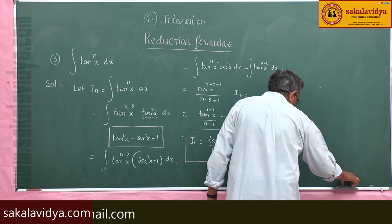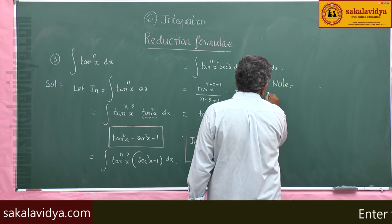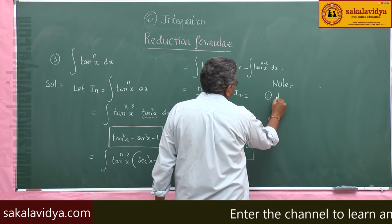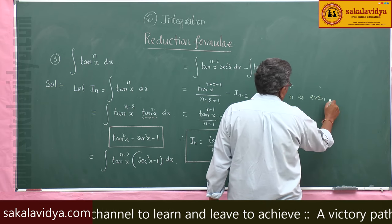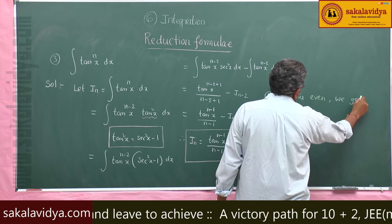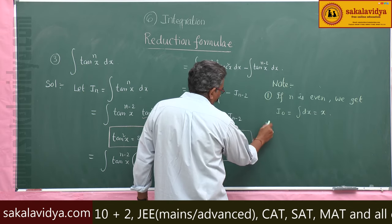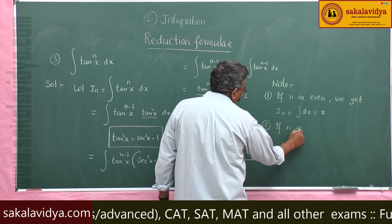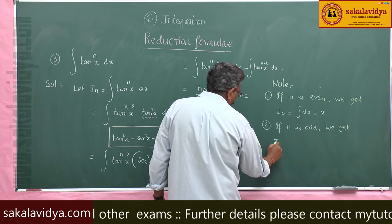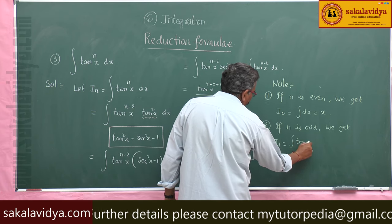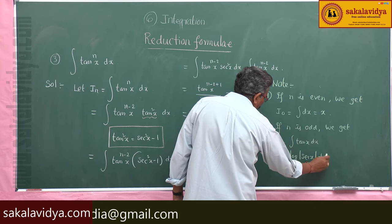Note: if n is even, after successive reduction we get I_0, which is the integral of dx, giving x. If n is odd, after successive reduction we get I_1, which is the integral of tan x dx, equal to log mod secant x.